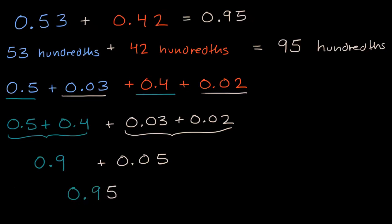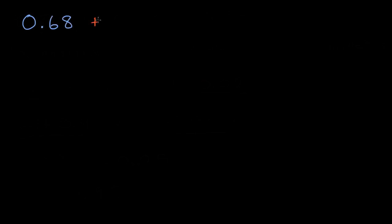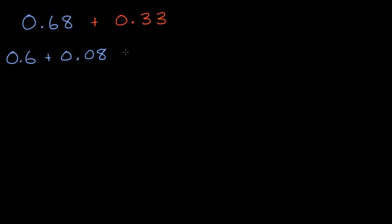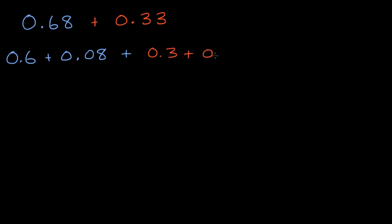Let's do another example, one that's a little bit more involved. Let's say I want to add 68 hundredths to 33 hundredths. What is this going to be? Pause the video and see if you can figure it out on your own. Well, there are a couple of ways to think about it. We could split up the tenths and the hundredths. So we could rewrite the first number as six-tenths plus eight-hundredths, and the second number as three-tenths plus three-hundredths.